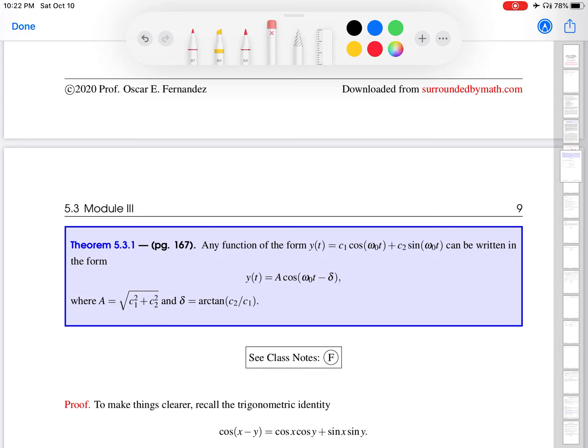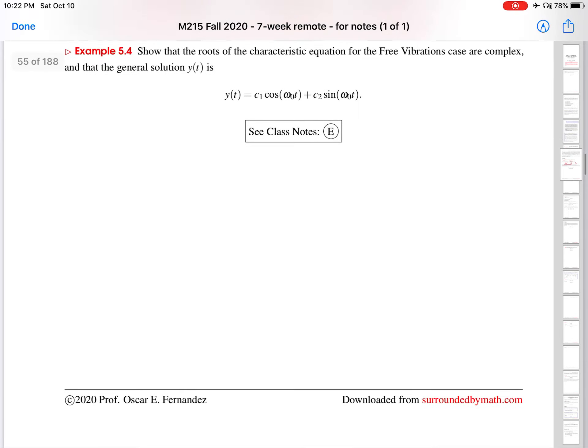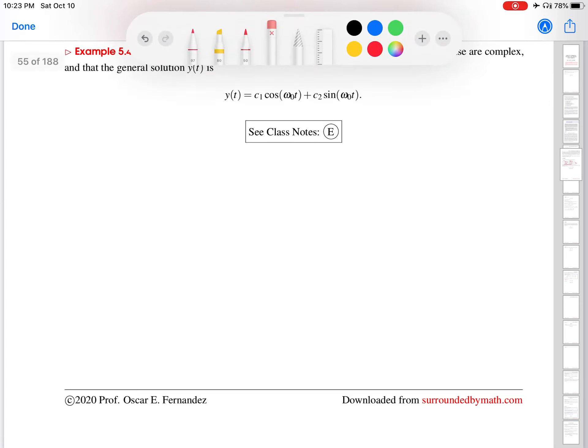Okay, so let's go back up here and do what we are asked to do. So how do we figure this out? Well, so the ODE in this case, in the free vibrations case, is Y double prime plus omega naught squared Y equals zero. So let's write out its characteristic equation, R squared plus omega naught squared equals zero.